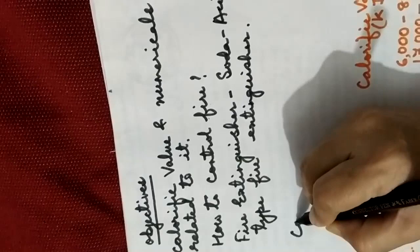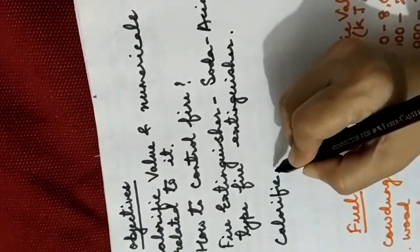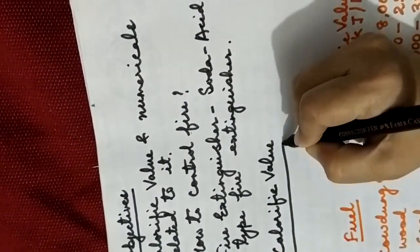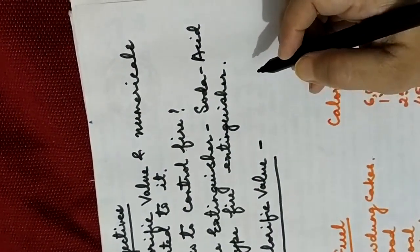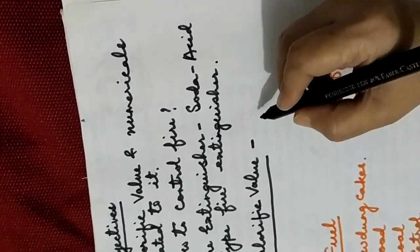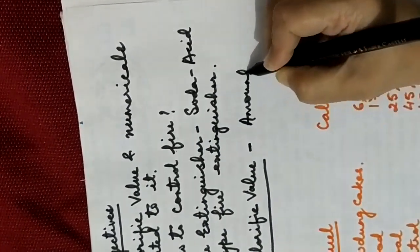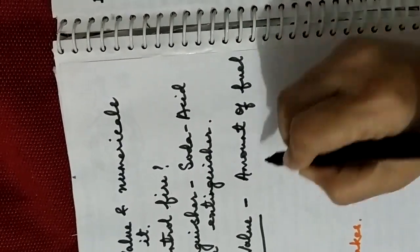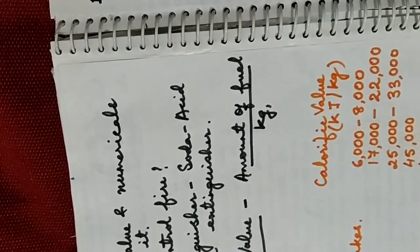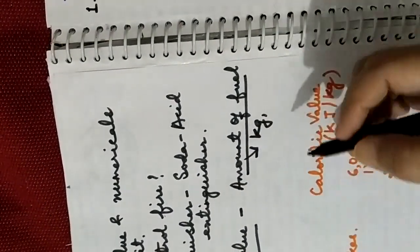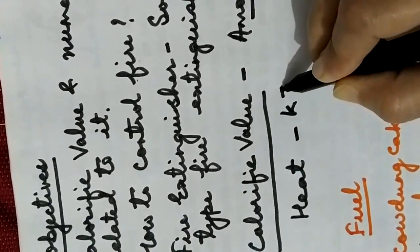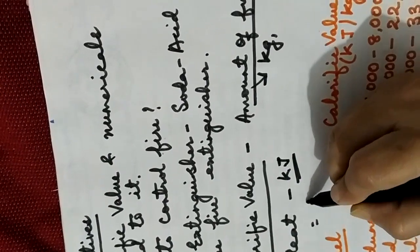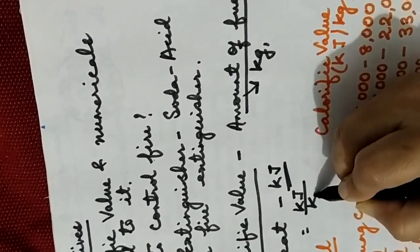Children, first of all we will have a look at calorific value. It is simply the amount of heat which is produced by burning 1 kilogram of a fuel in pure oxygen. The amount of fuel is expressed in kilograms and the amount of heat produced is expressed in kilojoules. So the calorific value is expressed in kilojoules per kilogram.